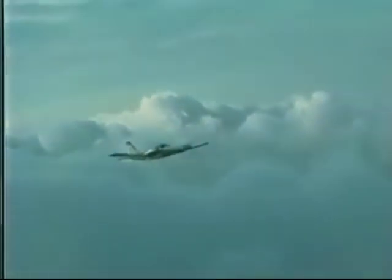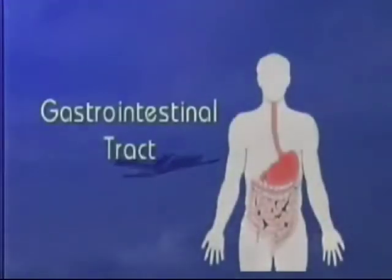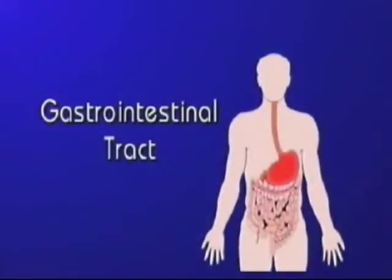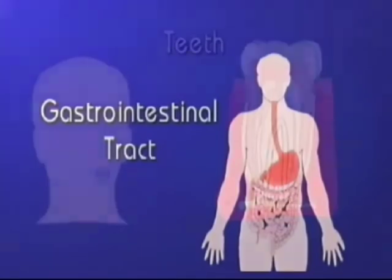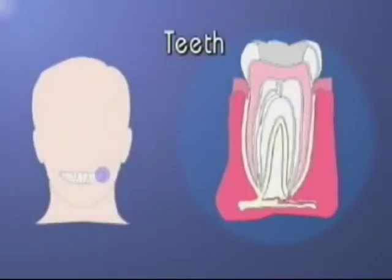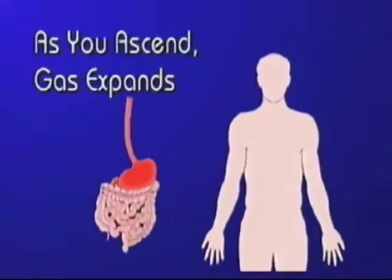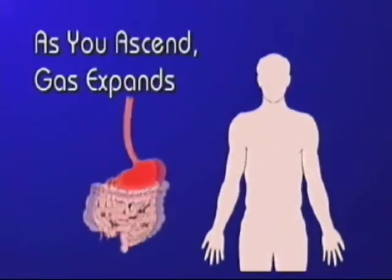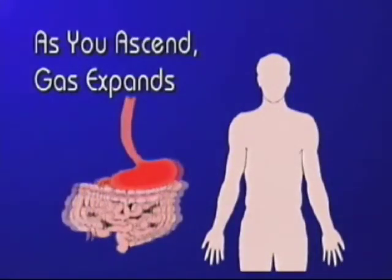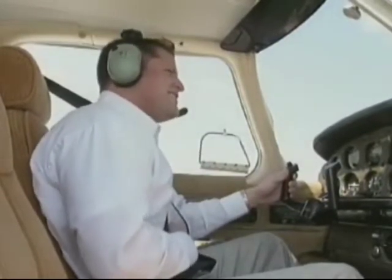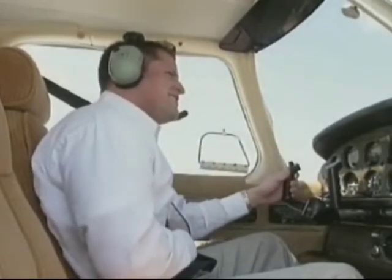During the ascending phase of a flight, you are more likely to develop problems in the gastrointestinal tract. In rare occasions, teeth may be the source of gas expansion problems. As you ascend, gas expands in the stomach and the intestines. This can cause abdominal pain and, in severe cases, may even cause fainting.